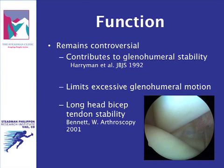Harriman and colleagues classically reported one of the first cadaveric studies examining the function of rotator interval structures. The authors concluded that the interval functions as a check rein against excessive motion by limiting posterior and inferior glenohumeral translation. Clinical studies citing altered motion with interval closure also support this proposed function, though the magnitude and direction of restriction is still debated.